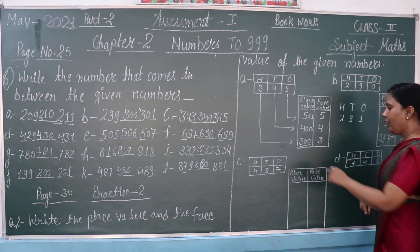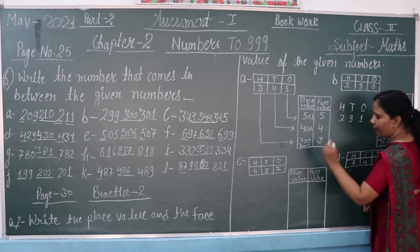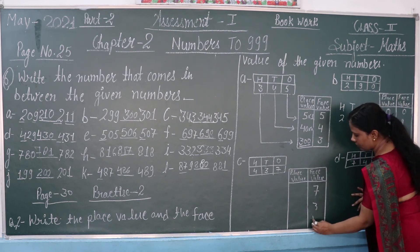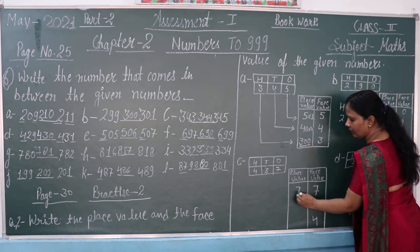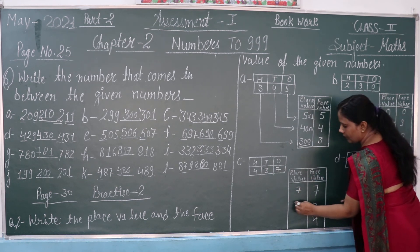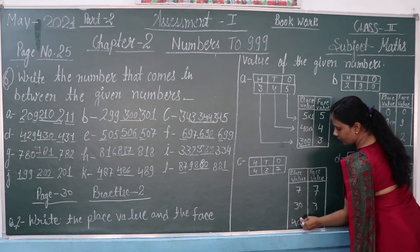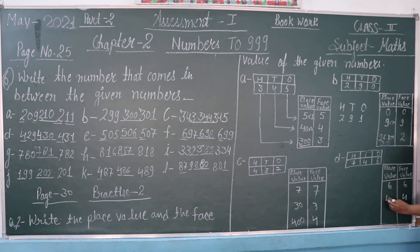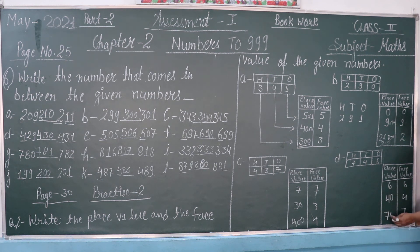Next question: 437. First we write the face values: 7, 3, and 4. Place values: 7 × 1 = 7; 3 × 10 = 30; 4 × 100 = 400. Next example — face value is 6, place value is 6. Face value is 4, place value is 40. And the hundreds digit gives place value 700.